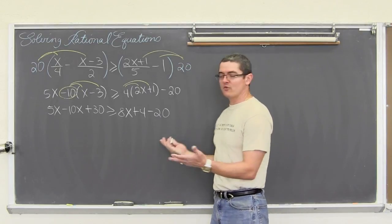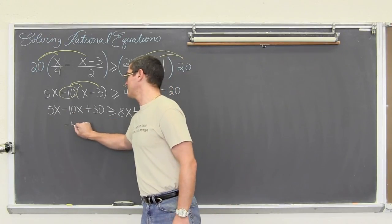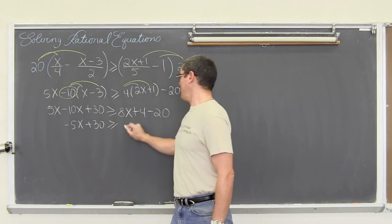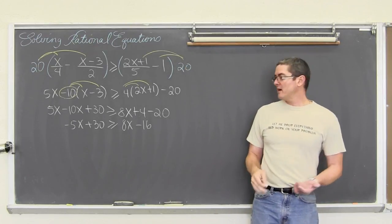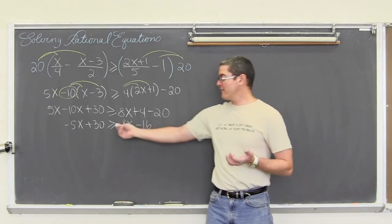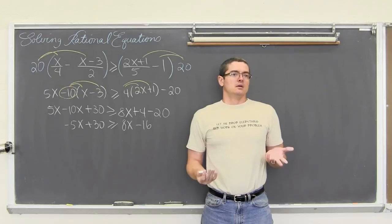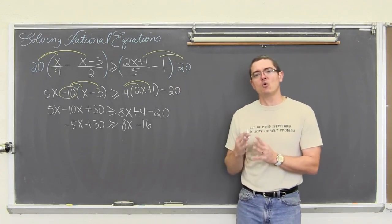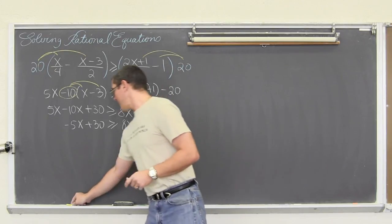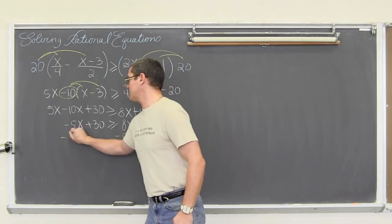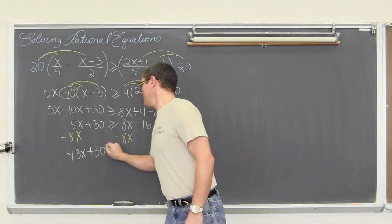For a change we don't have a second degree equation here, so we are going to be able to just get x by itself. Adding like terms: we have 5 minus 10 which is negative 5x, and 4 minus 20 which is negative 16. Now I have a variable on both the left and right hand side. I see more mistakes when students move their variables to the right as opposed to the left. So I am going to subtract both sides by 8x and move my variable to the left. Negative 5 and negative 8 is negative 13x, plus 30 is greater than or equal to negative 16.